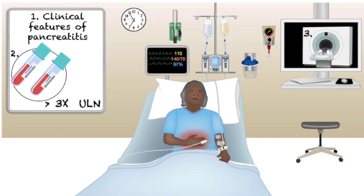Alcoholic pancreatitis is frequently overdiagnosed. It requires heavy alcohol use — at least 50 grams per day, usually for five or more years. That's roughly four or more standard drinks every single day for years. Don't label someone with alcoholic pancreatitis just because they admit to drinking on weekends. Wrongly attributing it to alcohol means you stop looking and might miss a real treatable cause like small gallstones, high triglycerides, or a medication. Always get a clear history on the quantity and duration of use.